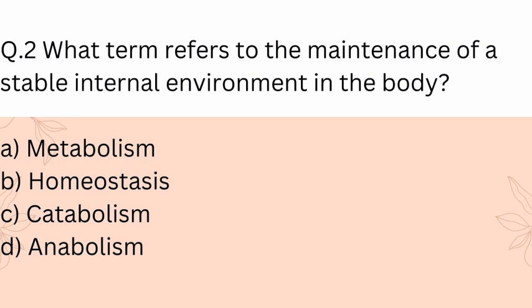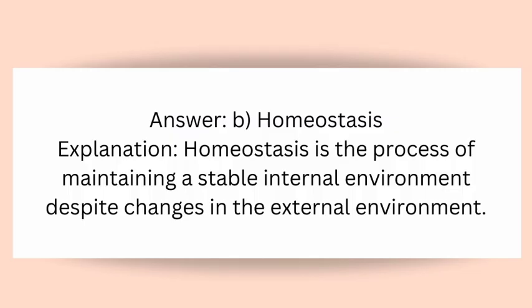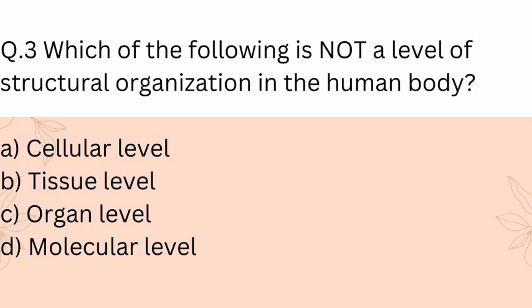Question 2: Which term refers to the maintenance of a stable internal environment in the body? A) Metabolism, B) Homeostasis, C) Catabolism, D) Anabolism. Answer: B) Homeostasis. Explanation: Homeostasis is the process of maintaining a stable internal environment despite changes in the external environment.